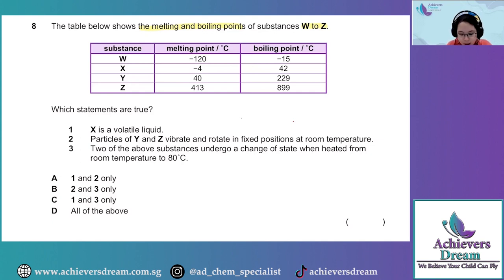Statement 1. X is a volatile liquid. So what exactly is a volatile liquid? This is a liquid with a low boiling point. In other words, it evaporates very easily at room temperature.